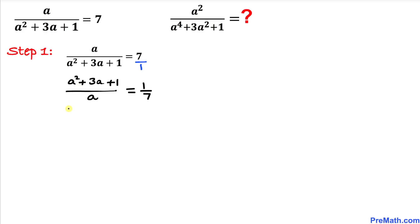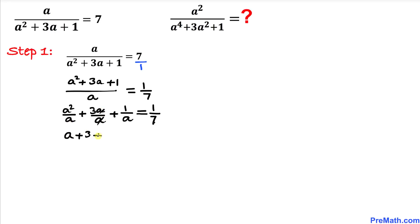The left-hand side can be written as individual fractions: a squared divided by a, plus 3a divided by a, plus 1 divided by a, equals 1 divided by 7. Simplifying, a squared over a gives us a, and 3a over a gives us 3, so we have a plus 3 plus 1 over a equals 1 over 7. Moving the 3 to the right-hand side gives us a plus 1 over a equals 1 over 7 minus 3.